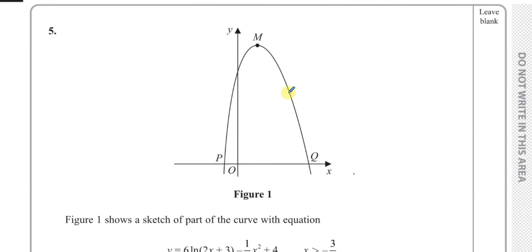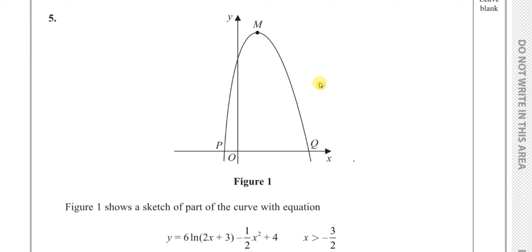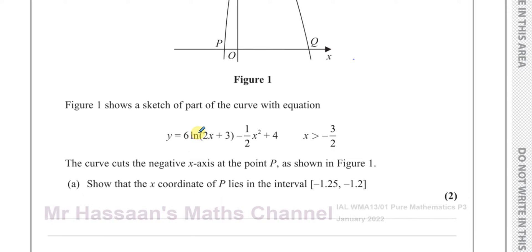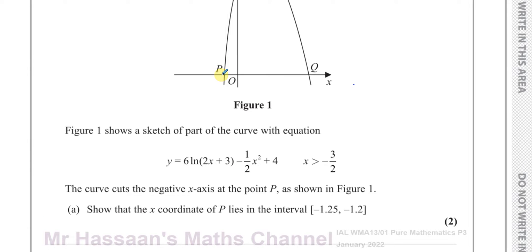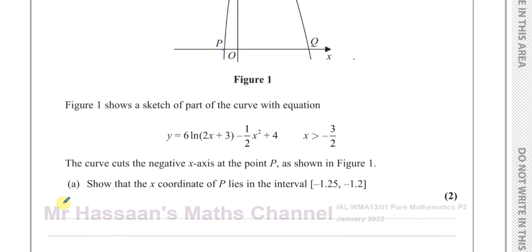It says figure 1 shows a sketch of part of the curve with the equation y equals 6 ln(2x + 3) minus one half x squared plus 4, and x is greater than or equal to negative three over two. The curve cuts the negative x-axis at the point P, as shown in figure 1. Show that the x-coordinate of P lies in the interval between minus 1.25 and minus 1.2.